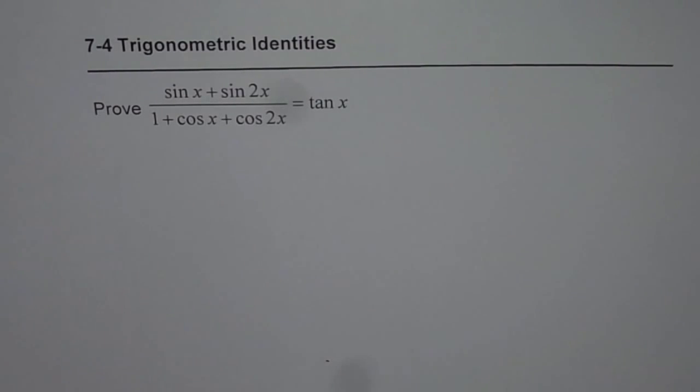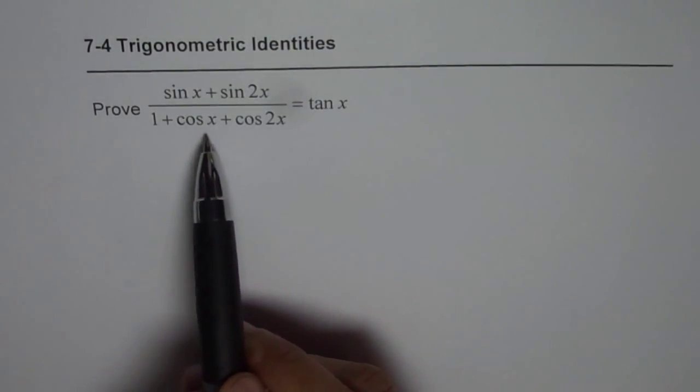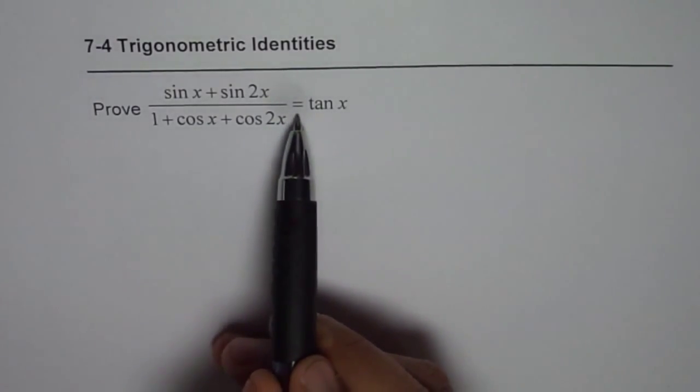Trigonometric identities. I am Anil Kumar and now we will prove some trigonometric identities. We have here sin x plus sin 2x divided by 1 plus cos x plus cos 2x equal to tan x.